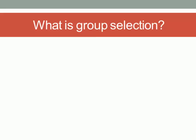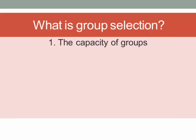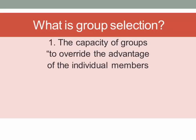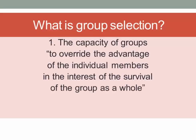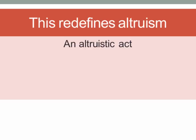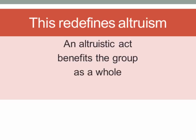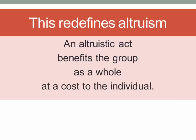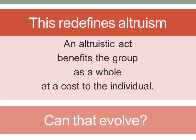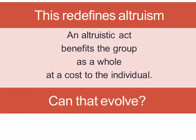At the heart of Wynne-Edwards' work and neo-functionalism in anthropology is group selection. What do we mean by group selection? There are two key arguments. First, groups possess the capacity to override the advantage to individuals within them in the interest of the group as a whole. It follows from this that altruism is redefined: instead of one individual sacrificing for another, from a group selection perspective an altruistic act is one that benefits the group as a whole at some reproductive cost to the individual. The question neo-Darwinians pose is: can this actually evolve?